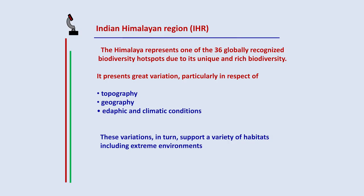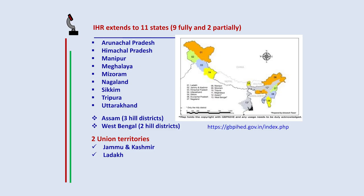The Indian Himalayan region represents one of the 36 globally recognized biodiversity hotspots due to its unique and rich biodiversity. It represents great variation, particularly in respect of its topography, geography, and edaphic and climatic conditions. These variations in turn support a variety of habitats, including extreme environments. The Indian Himalayan region, or IHR, extends to 11 states — 9 fully Himalayan states and 2 partially Himalayan states.